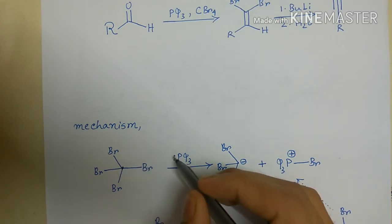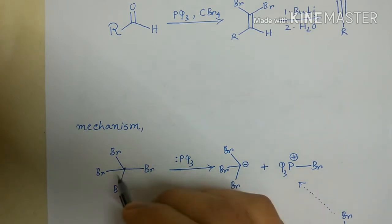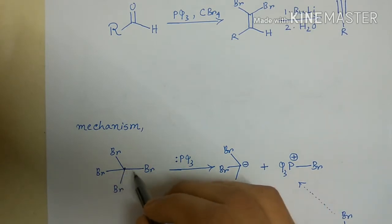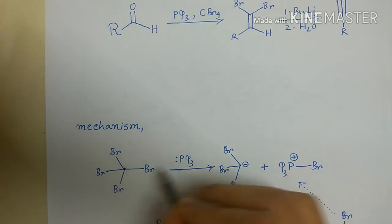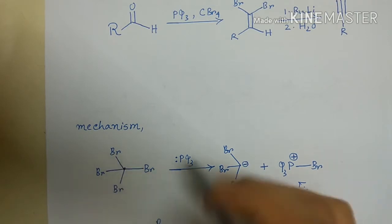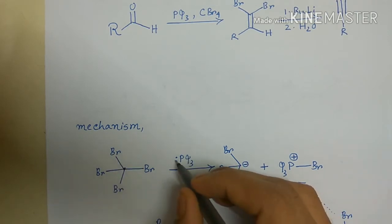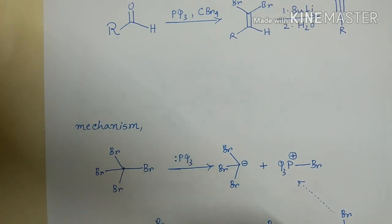The phosphine can attack the carbon center or the bromine. However, the central carbon is a quaternary carbon, and due to the presence of bulky bromine atoms, the attack of phosphine on this carbon center is not possible — it is sterically very much hindered.